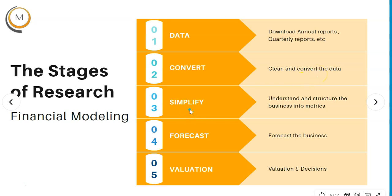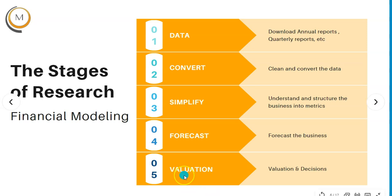The second step is to simplify the business — understanding how Infosys actually works and which metrics to watch closely. Third, you forecast the business: its business drivers, income statement, balance sheet, and cash flow statement. Finally, the fifth step is valuation of the business — determining whether the current price is worth buying, or if you're already invested, whether to sell.